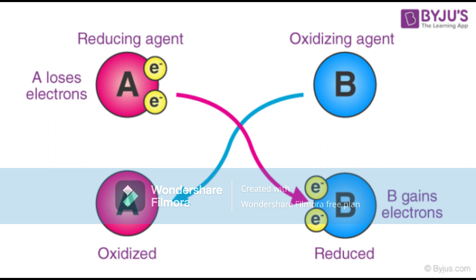When looking at this in the aquarium, it's easier to explain with an example. Aerobic bacteria breathes in oxygen and uses it to convert ammonia into nitrite and energy. Another aerobic bacteria then does the same thing but converts nitrite to nitrate. So in other words, ammonia is the food source that the bacteria gets its energy from; oxygen is simply an oxidizing agent that helps the bacteria accomplish this.